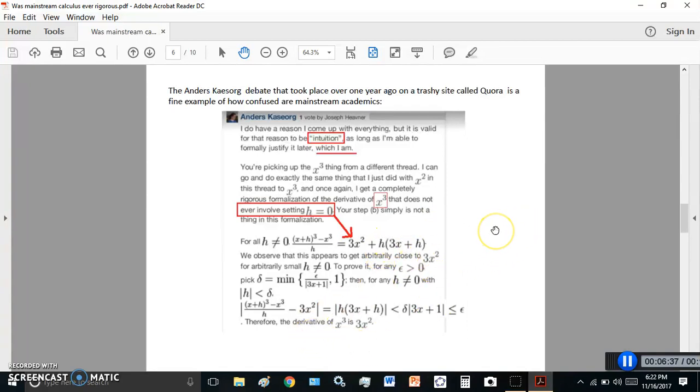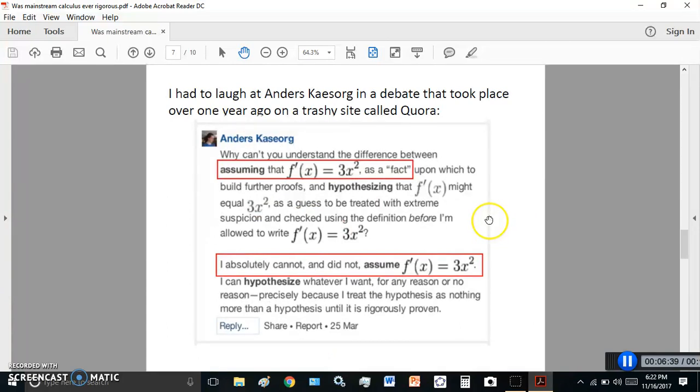So, the next comment becomes even more intriguing. It says, why can't you understand the difference between assuming that f'(x) is equal to 3x squared as a fact? How can you assume that something is a fact? You just don't do that, upon which to build further proofs, and hypothesizing that f'(x) might equal to 3x squared. And then notice that he says this in this statement, and he turns around and contradicts himself here in the next statement.